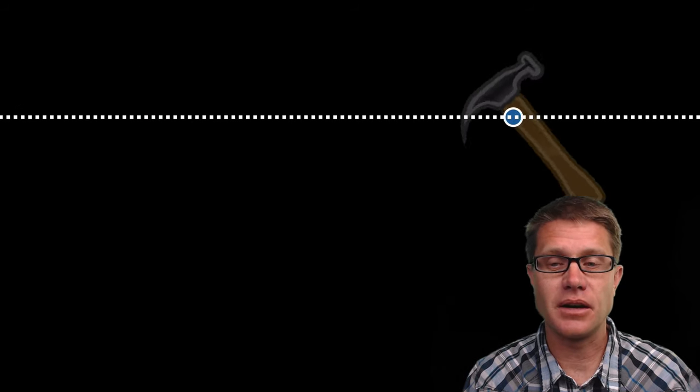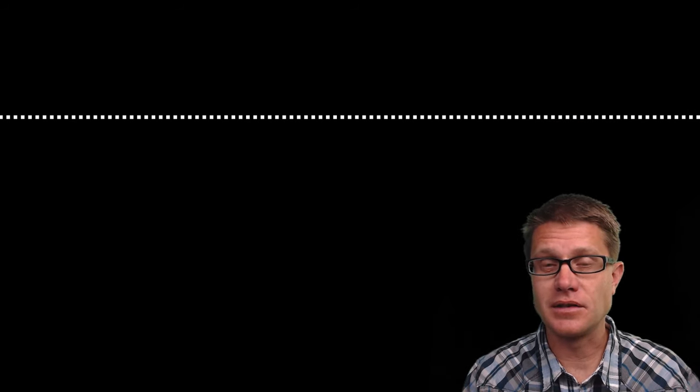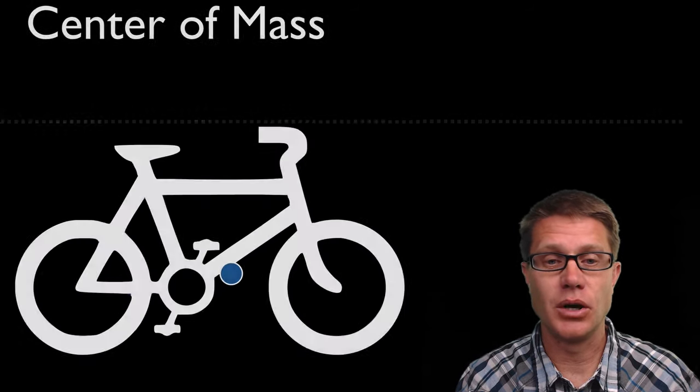You can see that that center of mass, I have slowed it down a little bit, is right along that line. So if we can figure out where the center of mass is, then we can accurately describe the motion of an object.